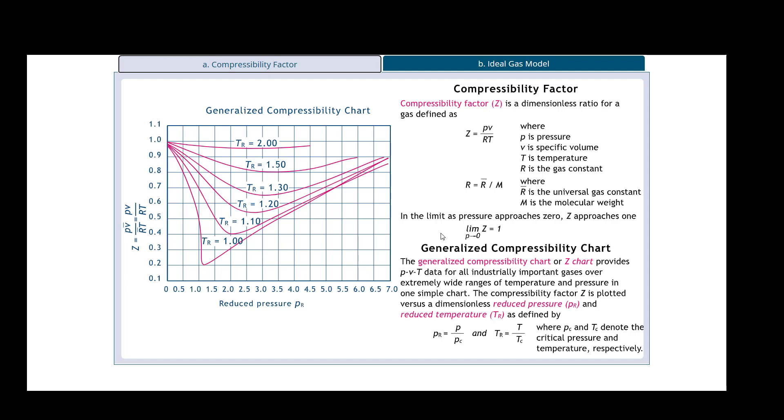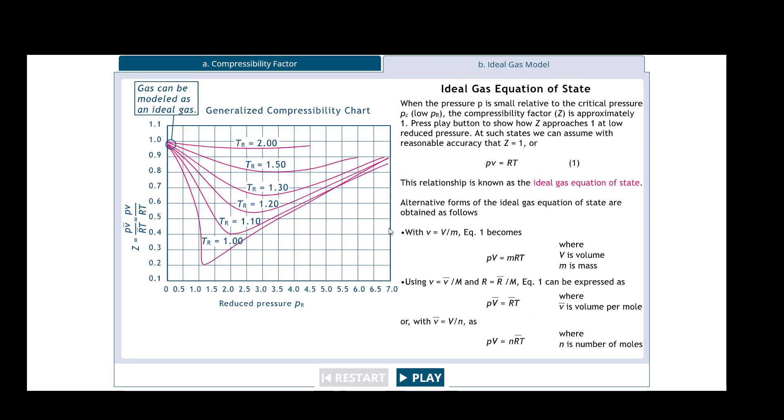The generalized compressibility chart, I will sometimes call them the compressibility chart or the Z chart, I'll use those interchangeably. It provides the PVT data for all industrial important gases over extremely wide ranges of temperatures. Just to note, the compressibility factor of Z is plotted versus a dimensionless reduced pressure and reduced temperature. And then here's the gas mass model and I'll play it.